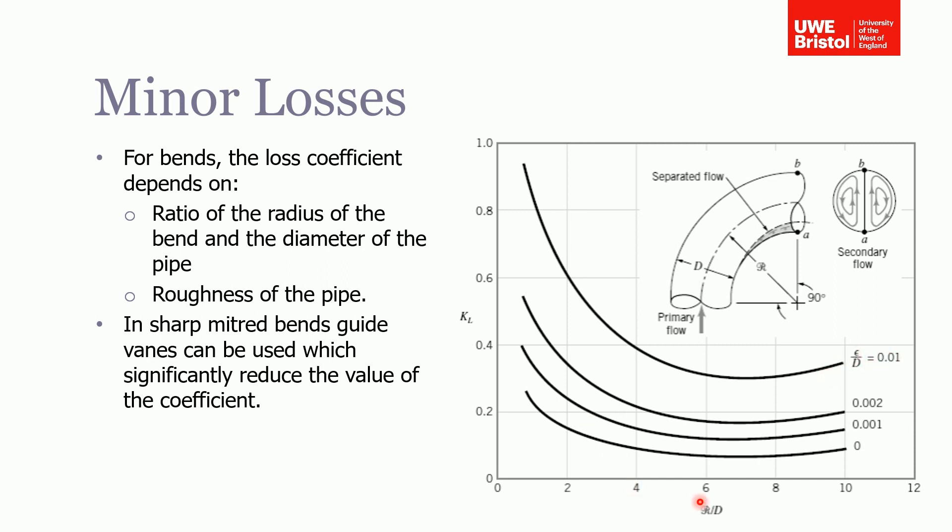Then what you do is you'd read up here onto this line and then read across, and then it would give us the loss coefficient of around 0.35, something like that—0.32.